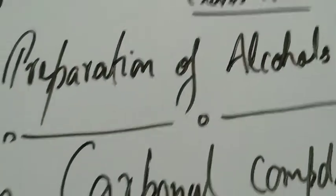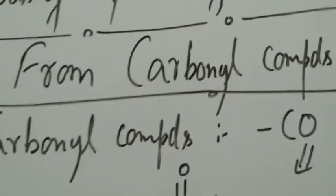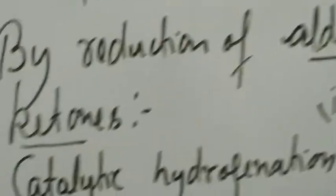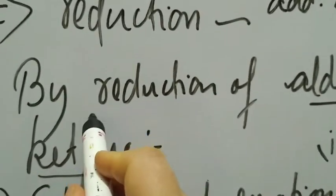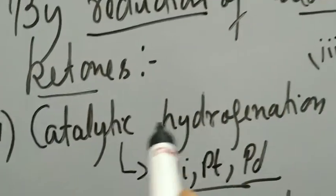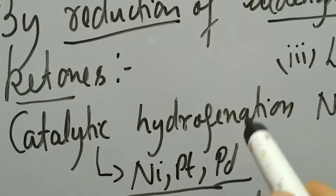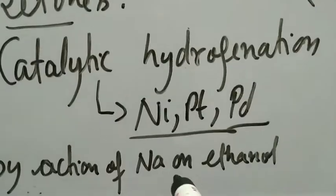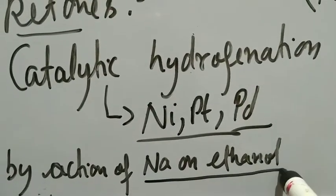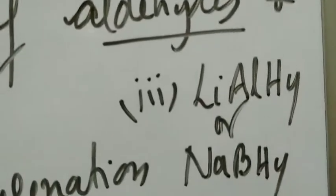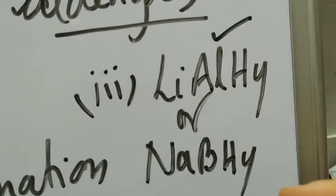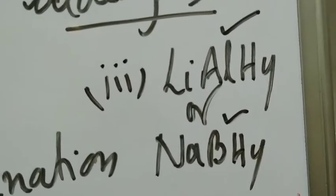Quick recap: we are trying to prepare an alcohol from a carbonyl compound. In the first part, we will do that by reduction of aldehydes and ketones. The reduction can be carried out either by catalytic hydrogenation — simply adding hydrogen in the presence of a catalyst — or by action of sodium on ethanol, or by using a complex metal hydride like lithium aluminium hydride or sodium borohydride. Let's now look at the reactions.